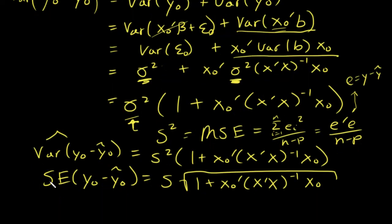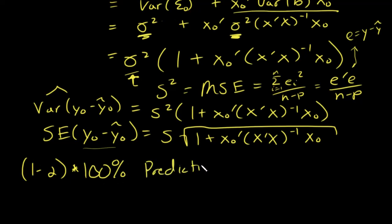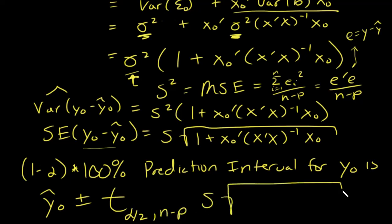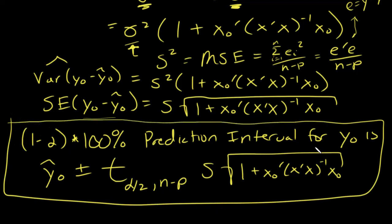Now that we have the standard error of this estimator, we can use it to construct our prediction interval. The 1 minus alpha times 100 percent prediction interval for y naught is: ŷ naught plus or minus t alpha divided by 2 with n minus p degrees of freedom, times s times the square root of 1 plus x naught transpose x transpose x inverse x naught. We can use this to calculate prediction intervals for a new observation y naught.